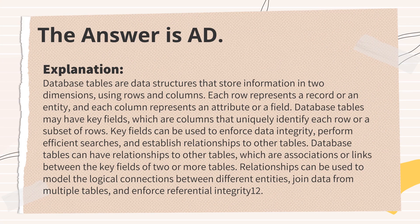The answer is A and D. Database tables are data structures that store information in two dimensions, using rows and columns. Each row represents a record or entity, and each column represents an attribute or field. Database tables may have key fields, which are columns that uniquely identify each row, used to enforce data integrity and perform efficient searches. Database tables can also have relationships to other tables, which model logical connections between different entities and enforce referential integrity.